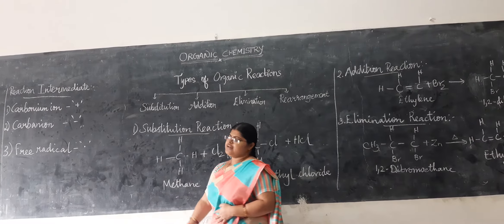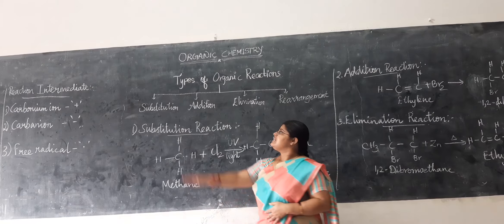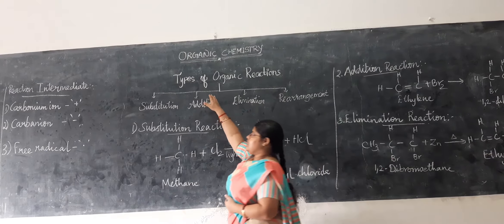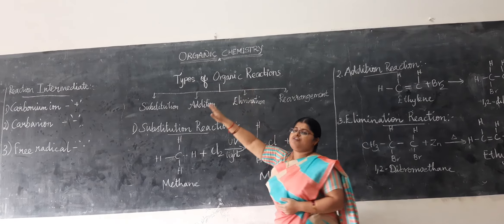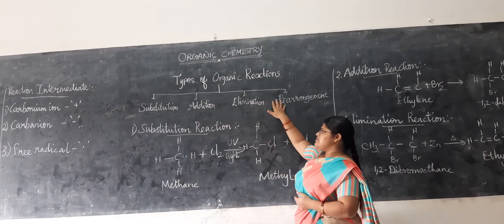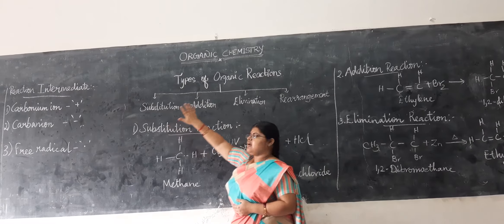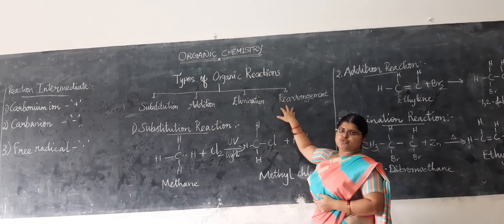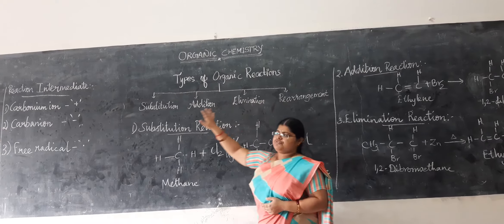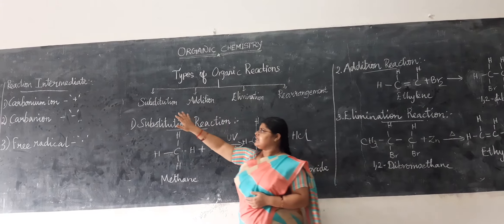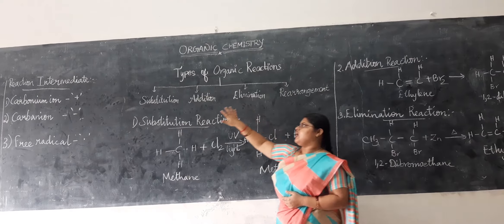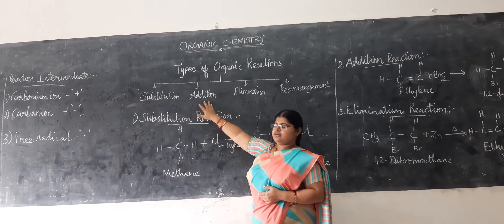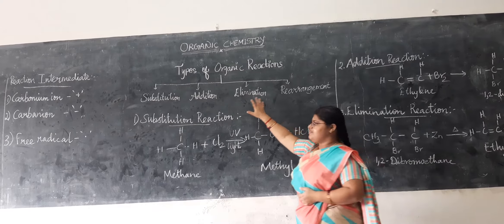Now we are moving on to the types of organic reactions. In these types of organic reactions, there are four sub-types: substitution reaction, addition reaction, elimination reaction, and rearrangement reaction. We are going to mainly discuss three reactions — substitution reaction, addition reaction, and elimination reaction.